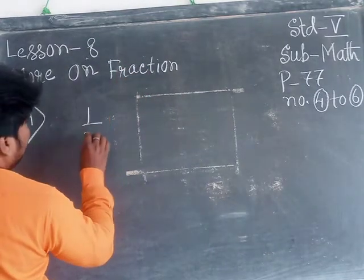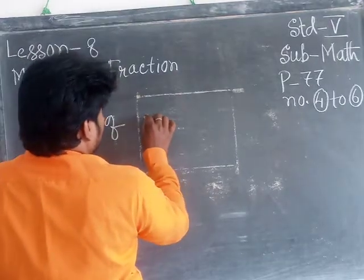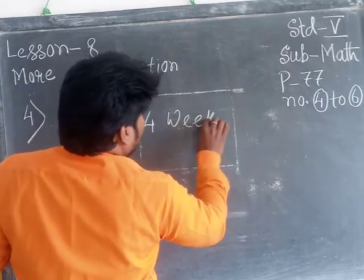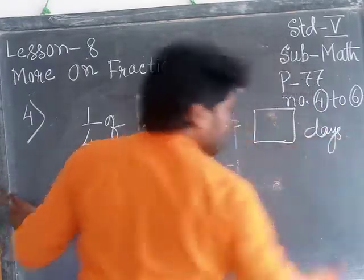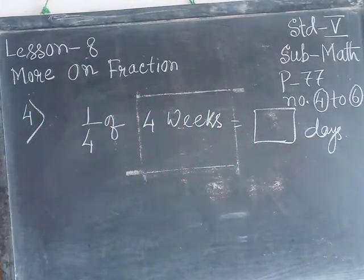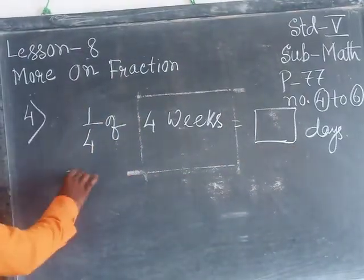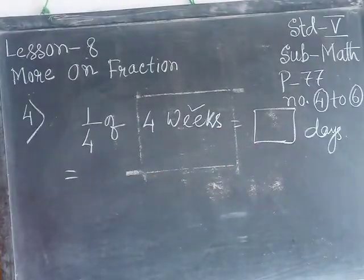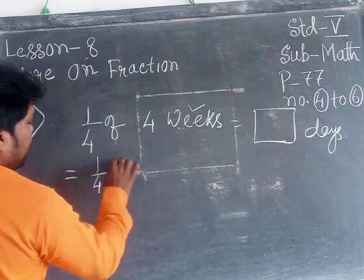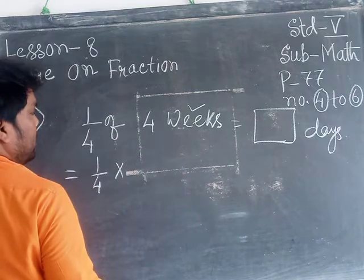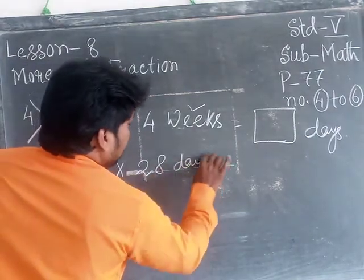Suppose one-fourth of four weeks, how many days? Here are four weeks and your answer will be in days, so weeks will be transferred into days. One week equals seven days. Now one-fourth times four weeks: one week equals seven days, four weeks equals 28 days. Four times seven, that means 28 days.